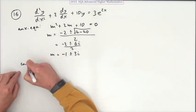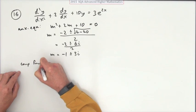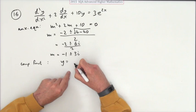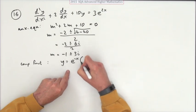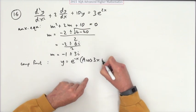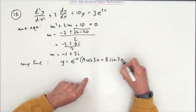Which means that your complementary function is going to be y equals the trig thing, unfortunately. e^(-x) times (A cos 3x + B sin 3x).